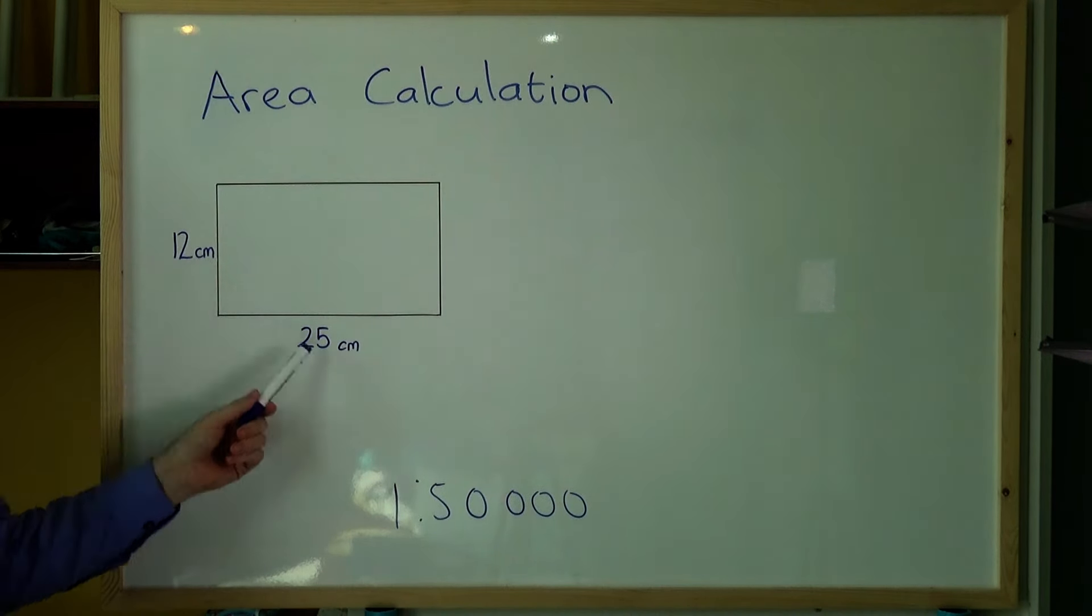Let's look at a few things first. We should always remember that we are working in centimeters. The scale of the map is 1 to 50,000 and we also know that an area calculation is length times width.